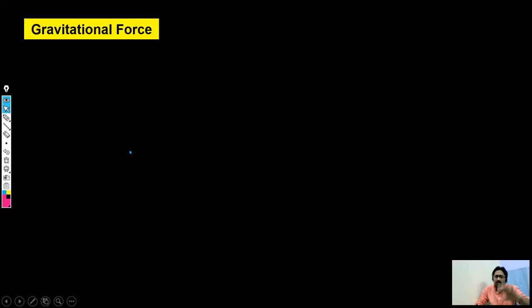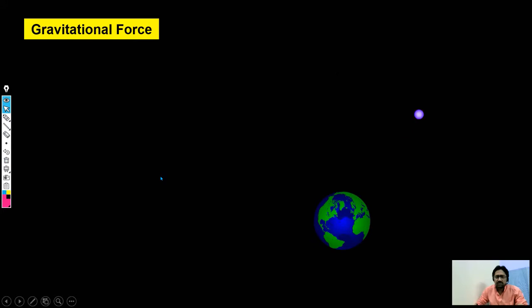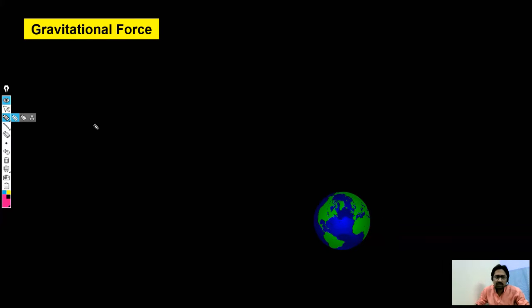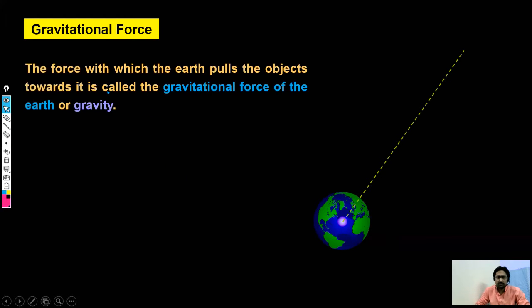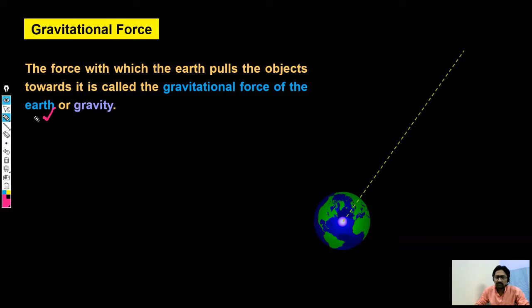We can also find a lot of examples around us. Suppose we have an object situated somewhere within the premises of the earth — we see that object will fall towards the center of the earth. The force with which the earth pulls the object towards it is called the gravitational force of the earth, or we call it gravity.